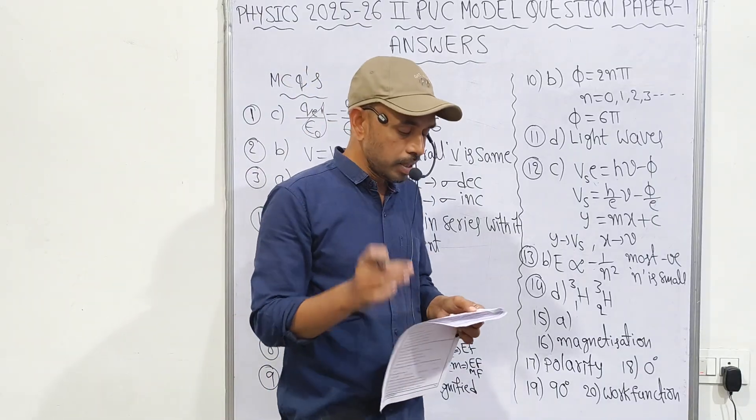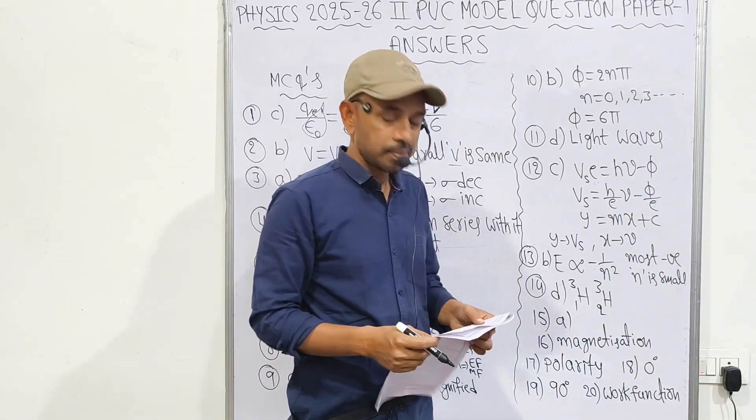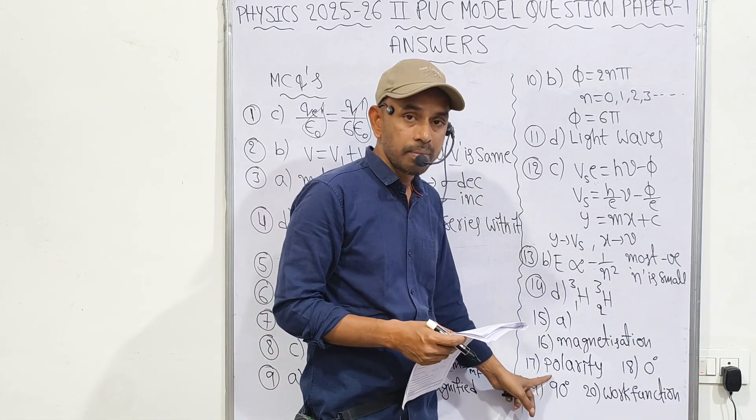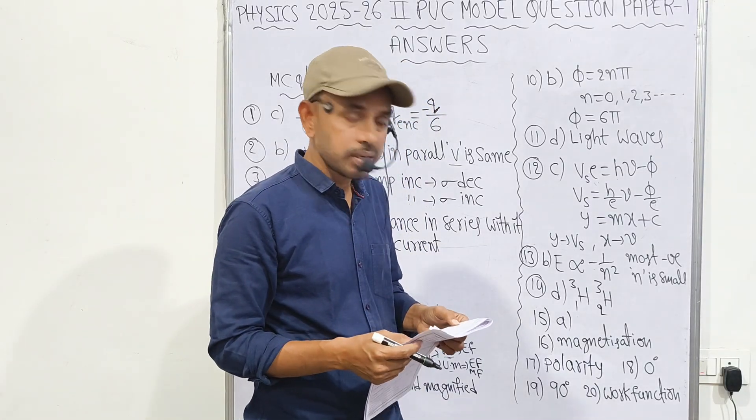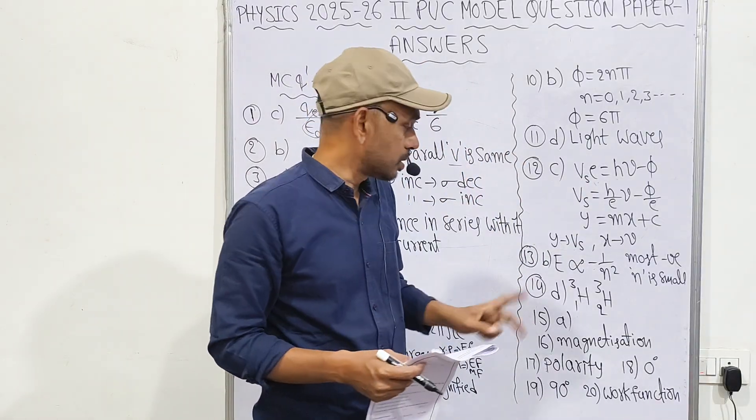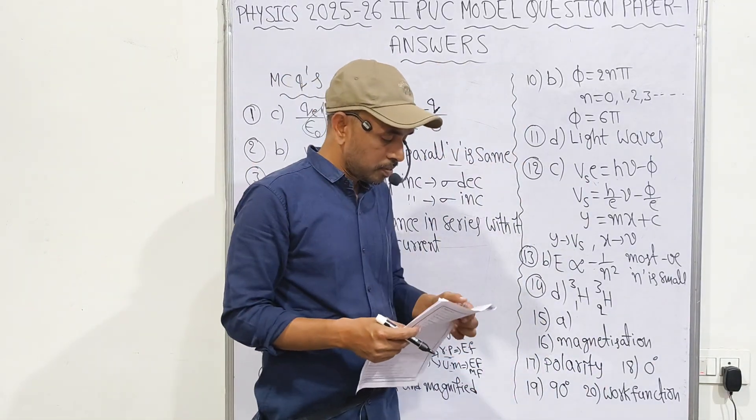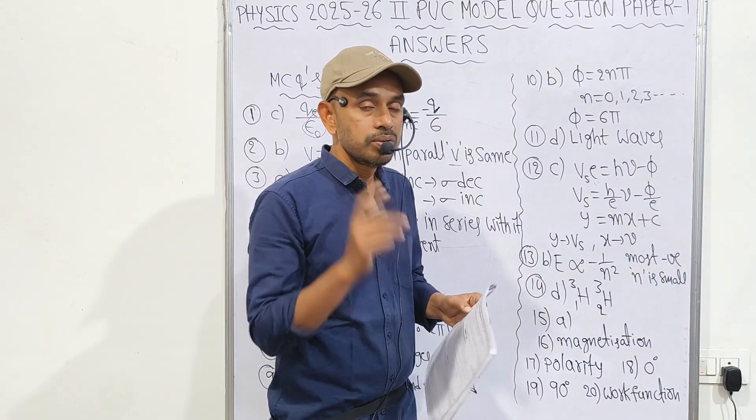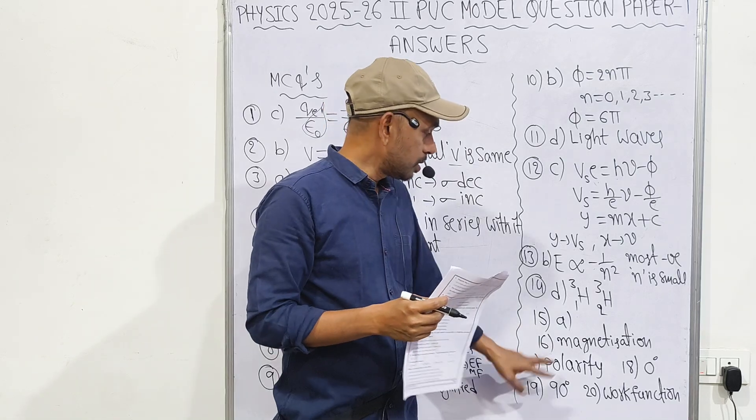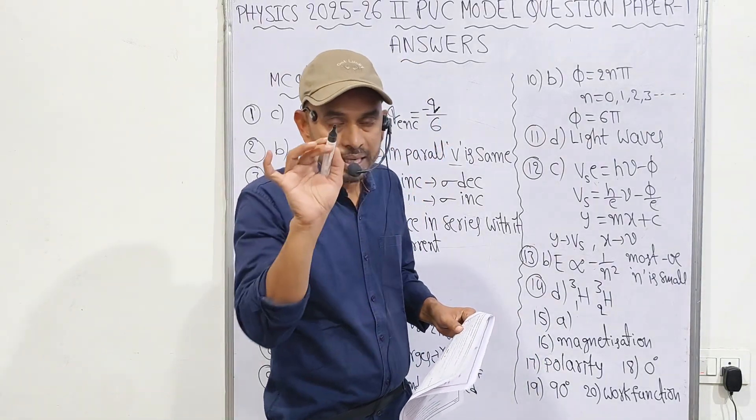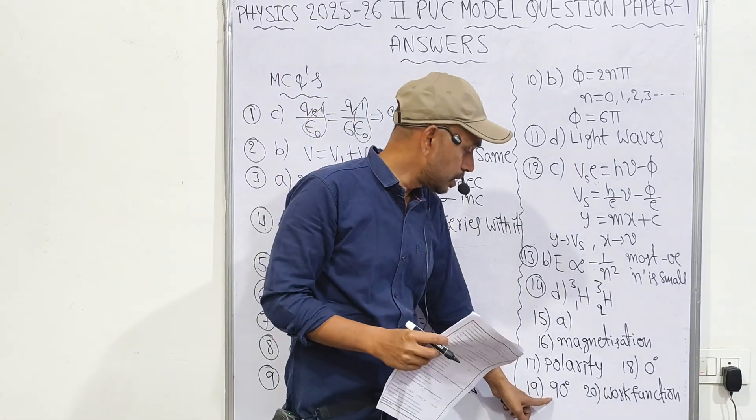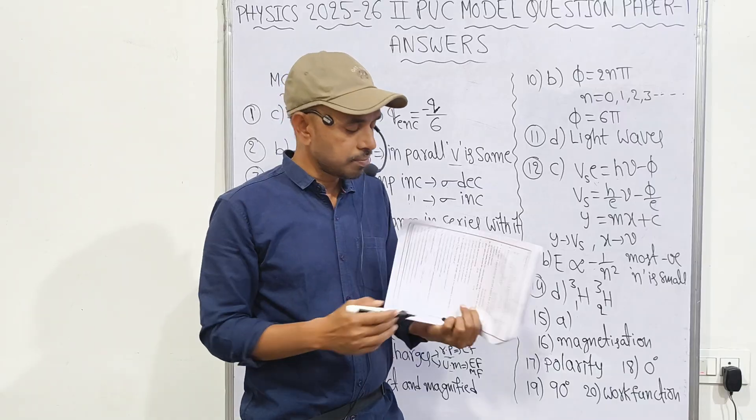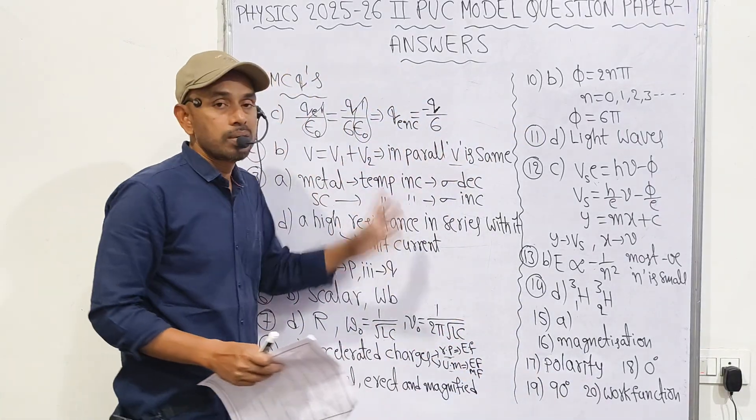Fill in the blanks. First one: the net magnetic moment acquired per unit volume of a sample is called magnetization. Next: Lenz's law gives the polarity of the induced EMF. Phase difference between voltage and current in pure resistive is zero. Inductive or capacitive means 90 degrees. 19th one: the angle of incident ray light in denser medium equals critical angle, then angle of refraction in rarer medium is 90 degrees. 20th: the minimum energy required by an electron to escape from the metal surface is called work function.